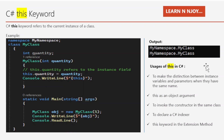Use case number one: to make the distinction between an instance variable and a parameter when they have the same name. We saw this in the earlier example where the instance variable and the parameter name both share the same name 'quantity'. To distinguish between them, we add 'this.' to the quantity so it represents the instance field. If we do not write 'this.' and just write 'quantity = quantity', then when printing it the zero default value of int gets printed, because when there is a name conflict the parameter variable is used instead of the instance field without 'this.'.